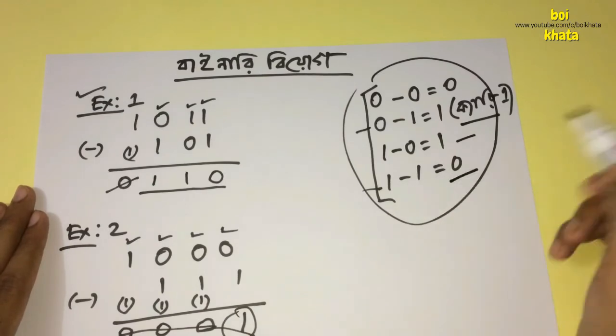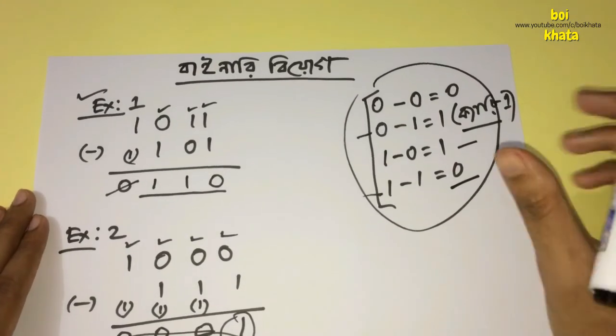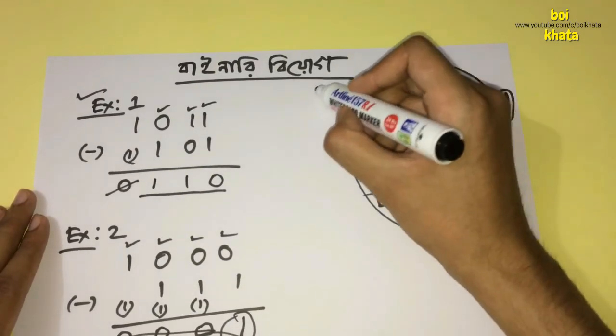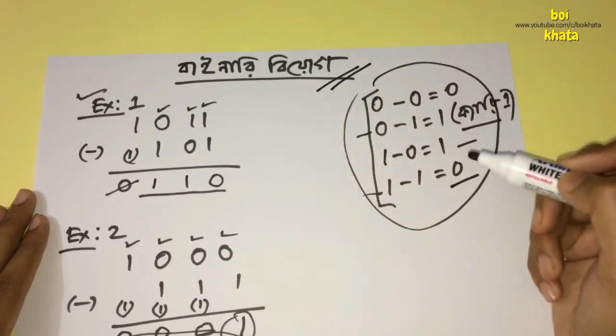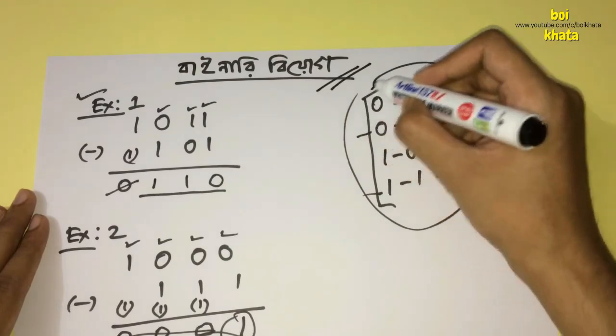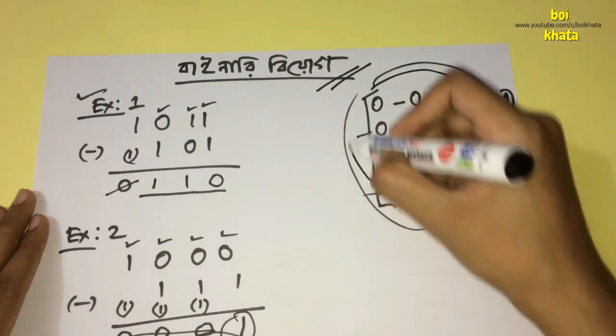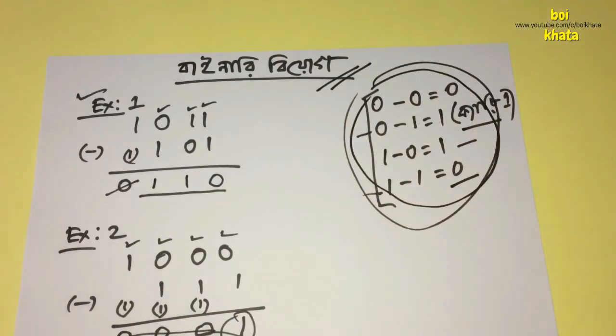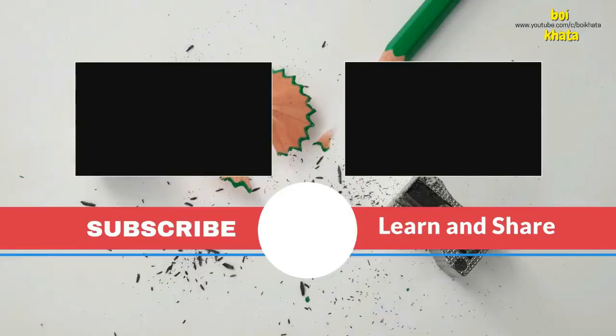The borrow will remain zero. So if we want to do binary subtraction very easily, then we have to keep these conditions in mind.